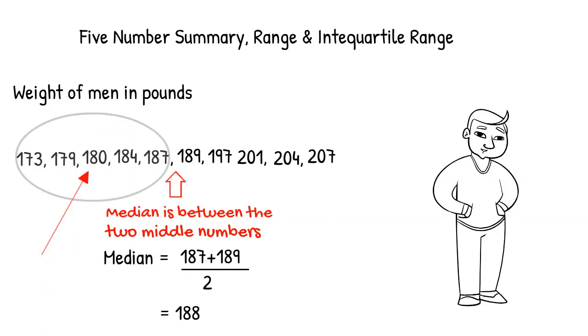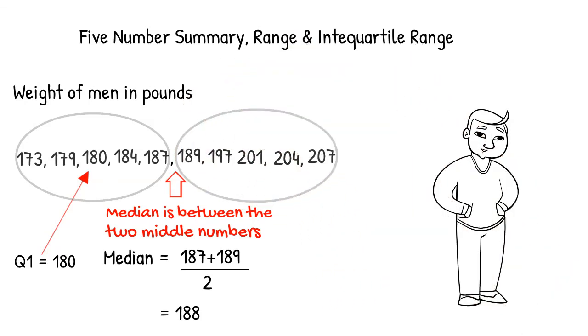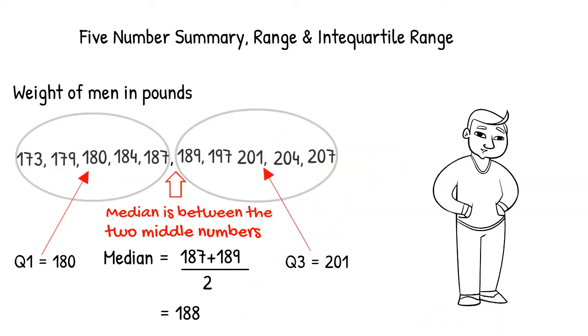Our lower quartile is 180 pounds. To find the upper quartile, we find the median of the upper half of the numbers. The upper quartile is 201 pounds.